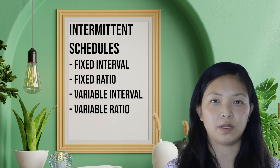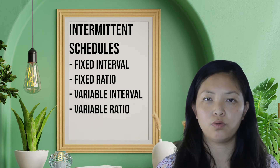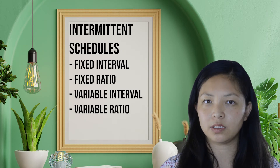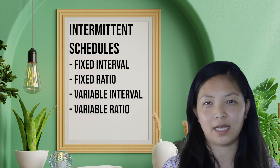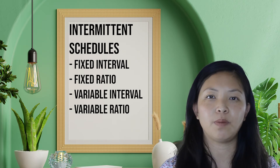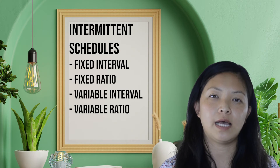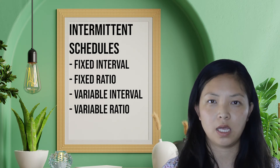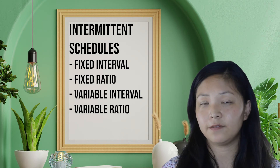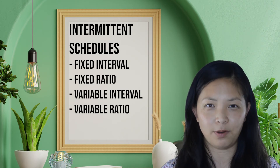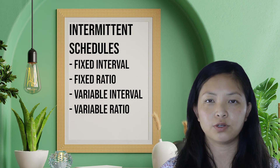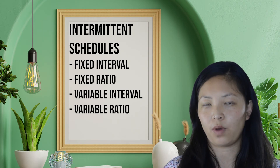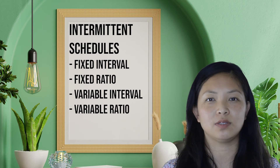Fixed ratio schedules refer to getting a stimulus when your actions reach a certain number of times. For a fixed ratio punishment schedule, many employers have termination policies — if you conduct four times of disciplinary actions, you'll be terminated. For an example of fixed ratio reinforcement, Lyft used to have a sign-in bonus: if you complete your first 75 rides, you will get a $500 sign-in bonus. Fixed ratio schedule normally works well in shaping new behavior, but it's also easy to burn out.